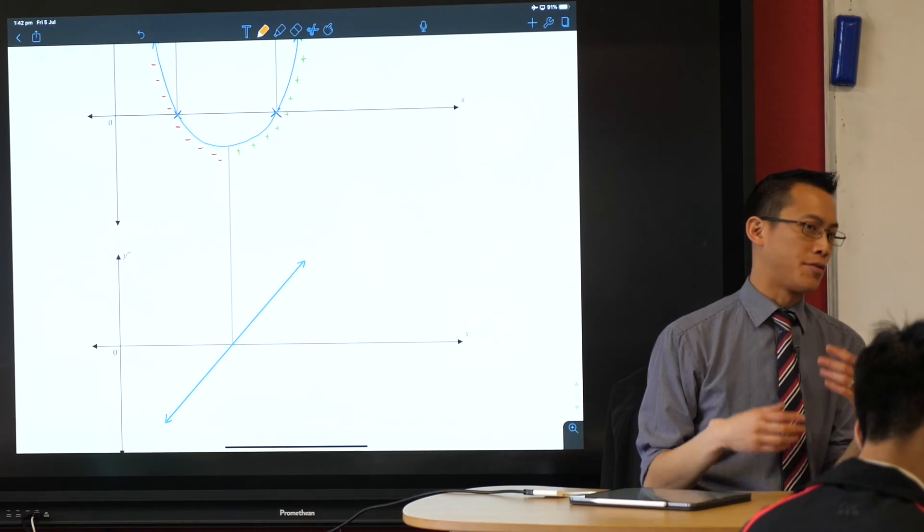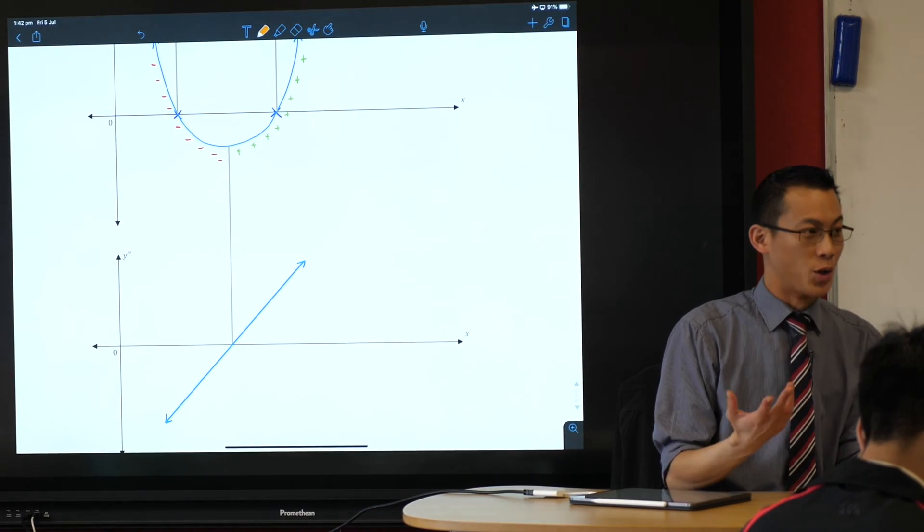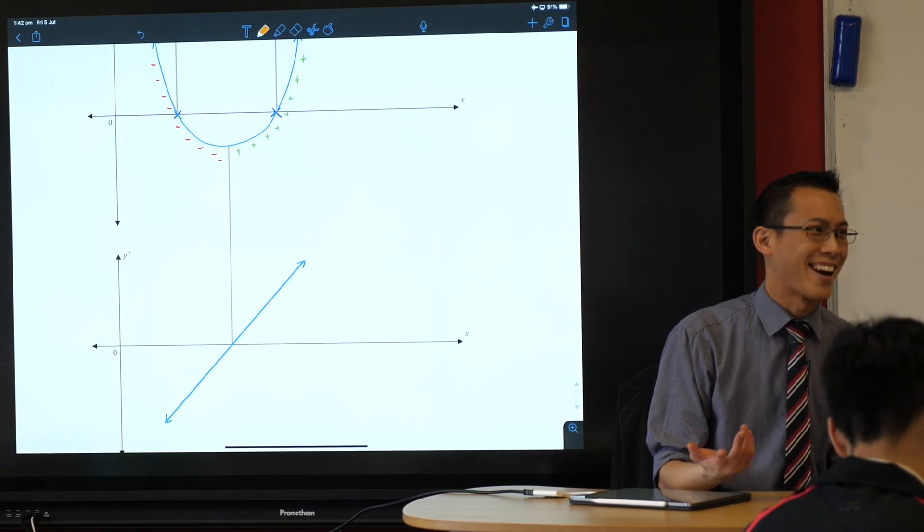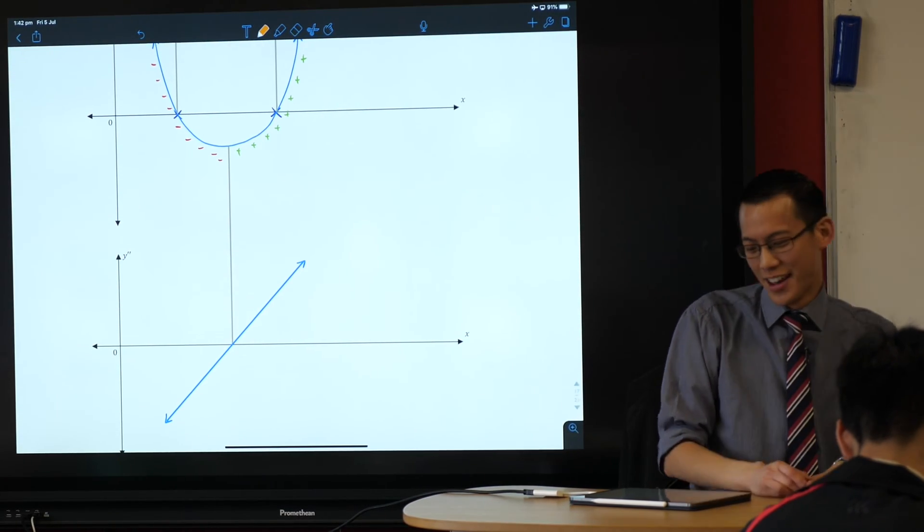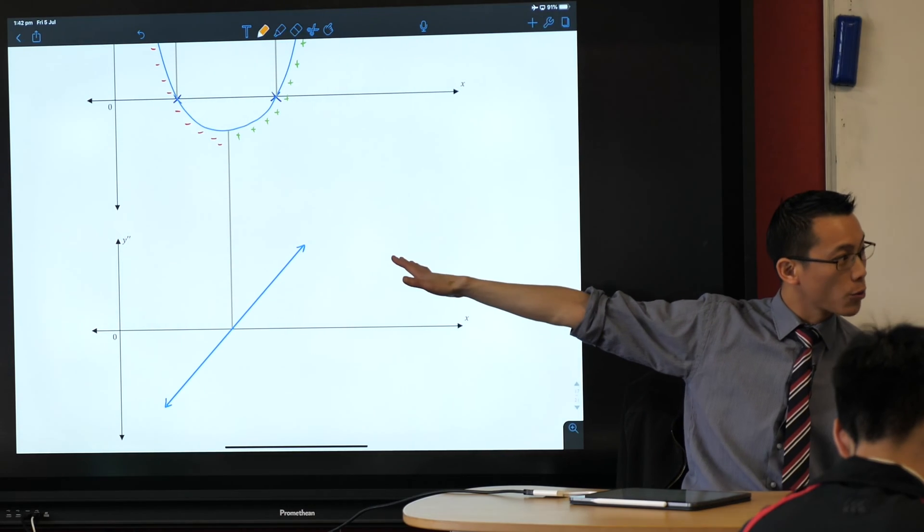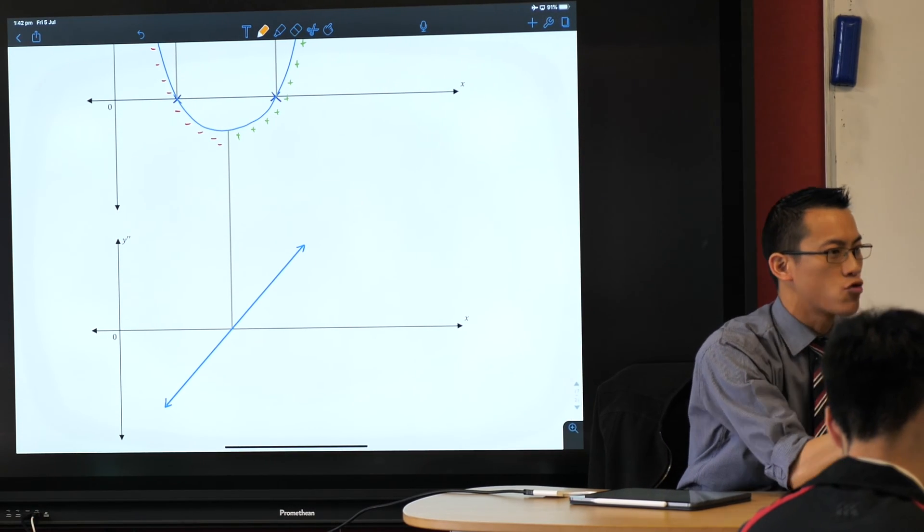This guy down the bottom you differentiate a second time so we call it the, not the first derivative but the second, the second derivative. Very creative name. Now have a look, the first thing is I've got a straight line.